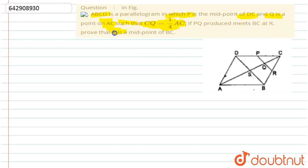R is the midpoint of BC. We are given that CQ equals 1/4 of AC, P is the midpoint of DC, and Q is the midpoint of AC. When PQ is produced and meets BC, we need to prove that R is the midpoint of BC. Given that CQ equals 1/4 of AC.